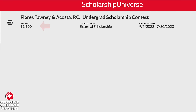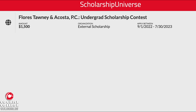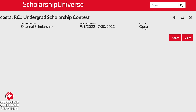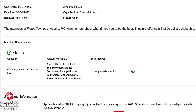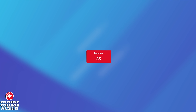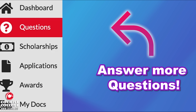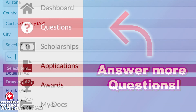The list has four sections: the name of the donor, the amount of the scholarship, and when you need to apply. It's always good to start applying right away because some of them expire within the week.